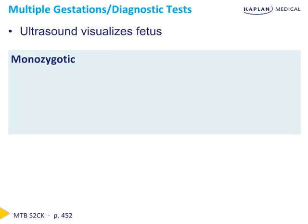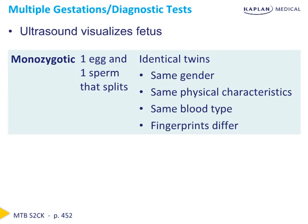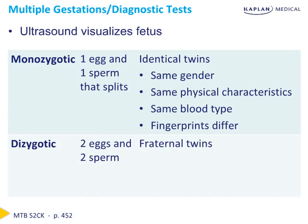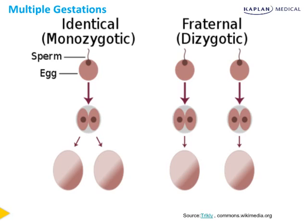There are two types important to remember for the Step 2 exam. Monozygotic twins result from one egg and one sperm that splits — these are identical twins with the same gender, same physical characteristics, same blood type, but different fingerprints. Dizygotic twins result from two eggs and two sperm — also called fraternal twins, they may be different or same sex and resemble each other. The rates of monozygotic twins are fairly constant worldwide, while rates of dizygotic twins increase with maternal age and parity and are higher among mothers with family histories of twins.